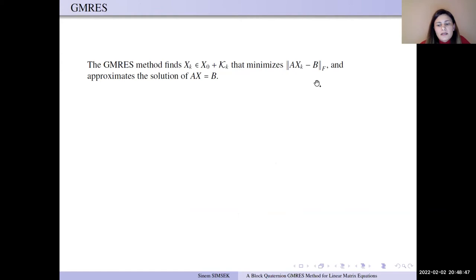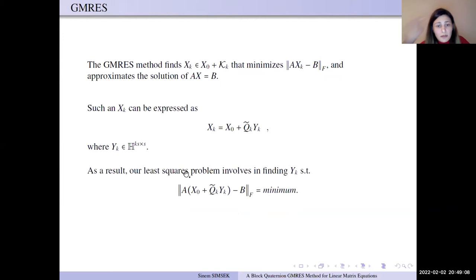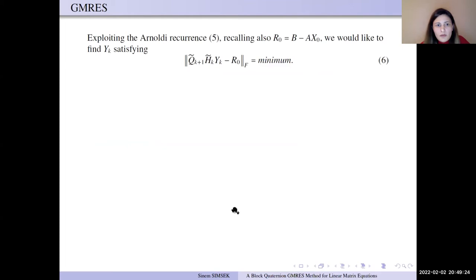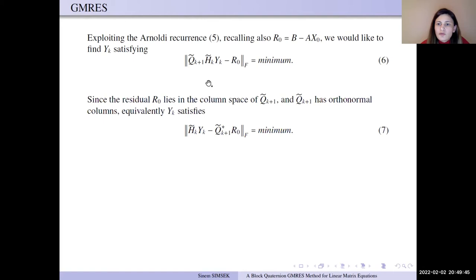We want to find the solution xk that minimizes this norm. So, the solution can be expressed as xk in this form, where Uk is in quaternion matrices and in this Krylov space k-dimensional Krylov space. As a result, our least squares problem is ||Axk - b|| equals this norm. We want to minimize this norm.